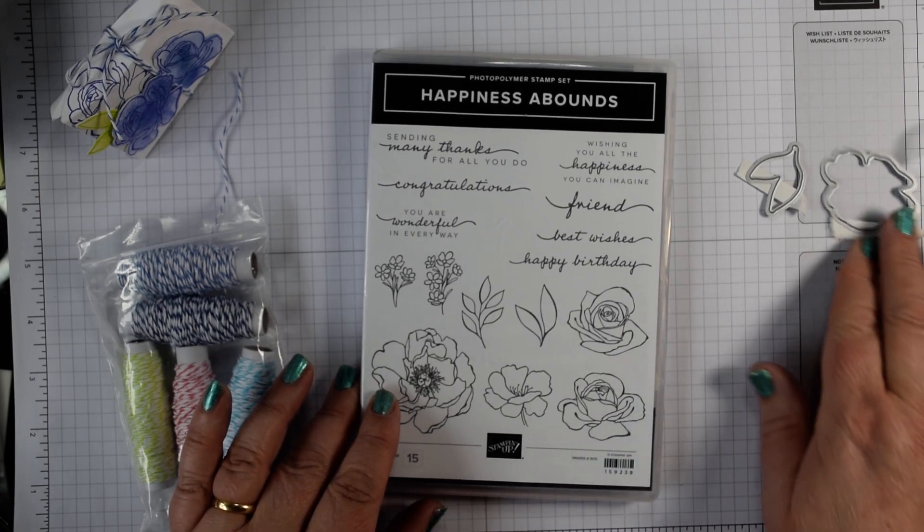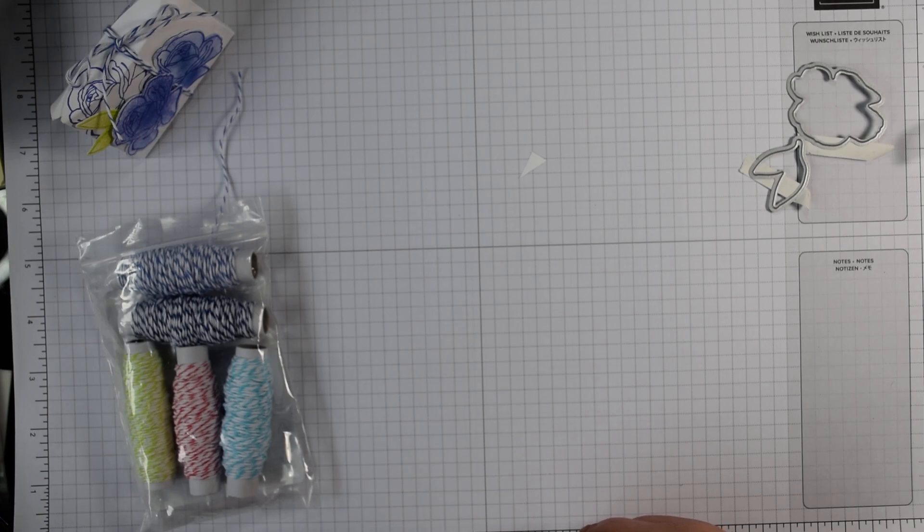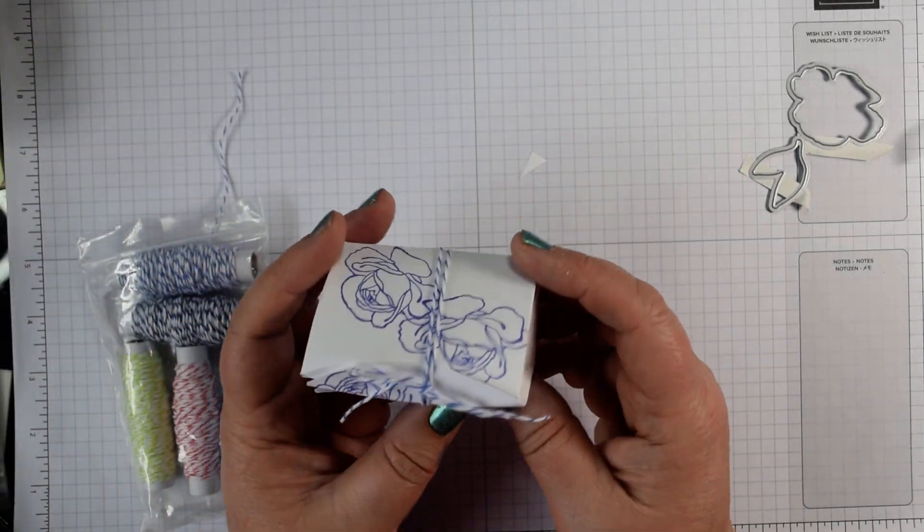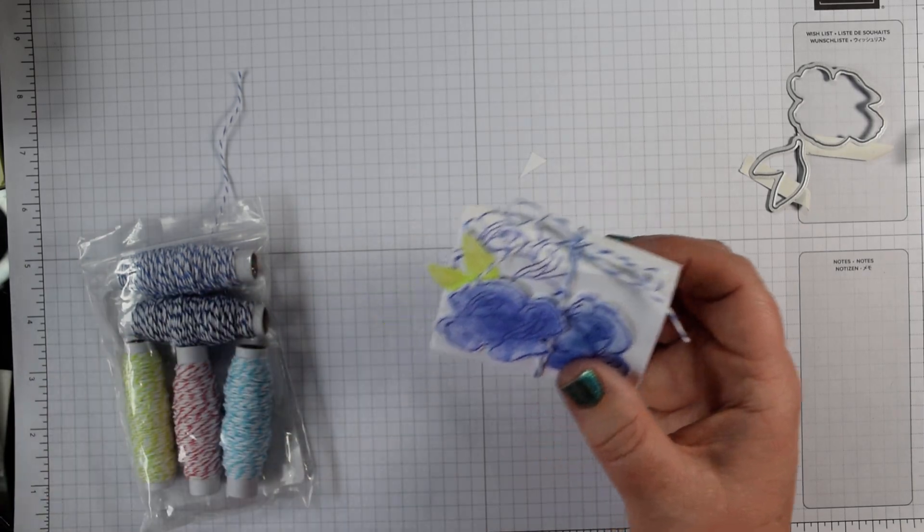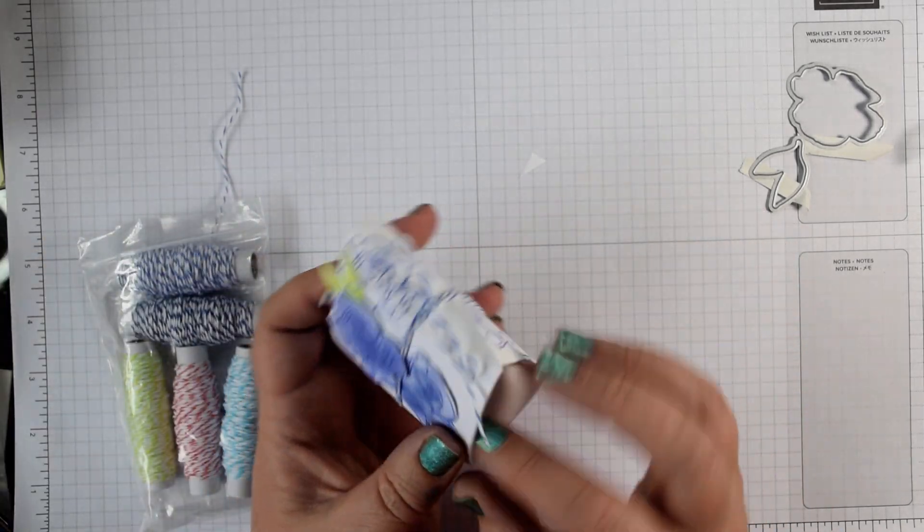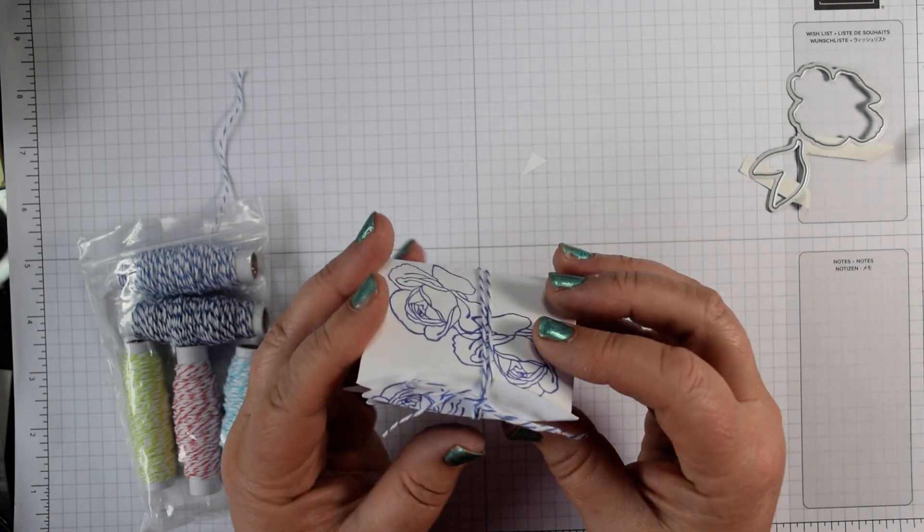These are the two dies I'm going to be using. This is what I'm going to make, which is just a little table favor. It happens to fit a couple of those gold colored chocolates, just about—it is a tight squeeze. It fits the Lindor balls a little bit better; they're just that little bit smaller.